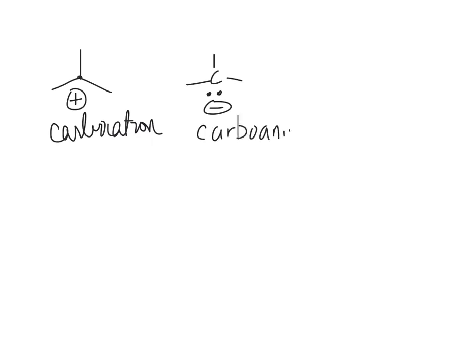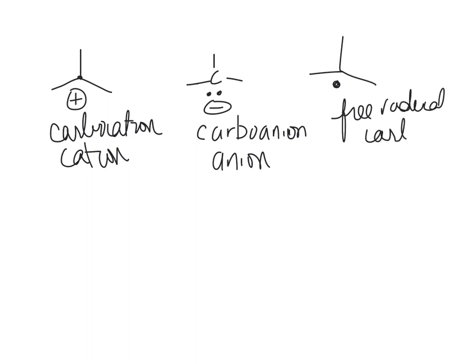The first thing we're going to do is talk about reactive intermediates. I'm going to give you three examples. We have this carbon here, which is called a carbocation. And this is a carboanion. Sometimes this is called a cation instead of a carbocation. This is called an anion, carbon, or a carboanion, because of carbon. And then you can have something like this, which is a free radical carbon.